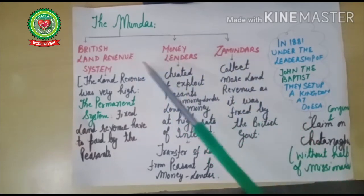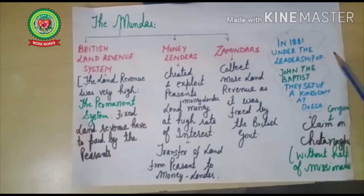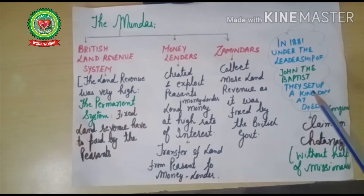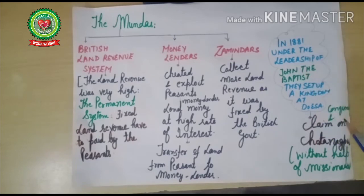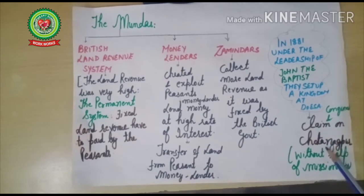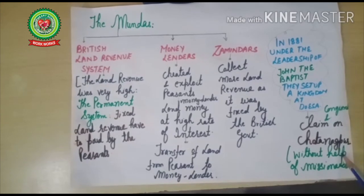Annoyed by this exploitation, in 1881 under the leadership of John the Baptist, the Mundas set up a kingdom at Dosa. Some German missionaries were not happy with this, so the Mundas conquered and claimed Chota Nagpur without the help of the German missionaries.